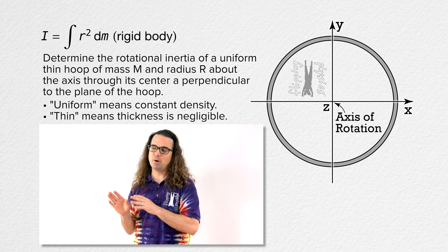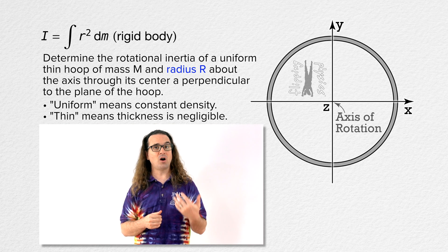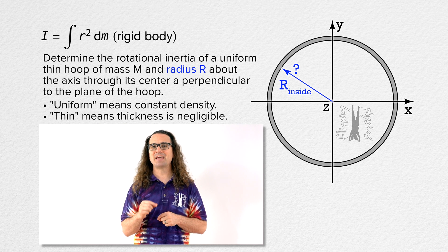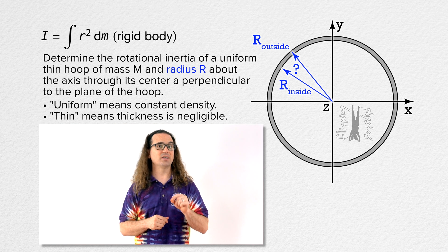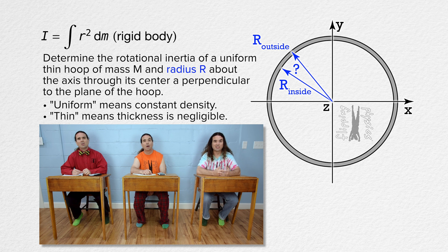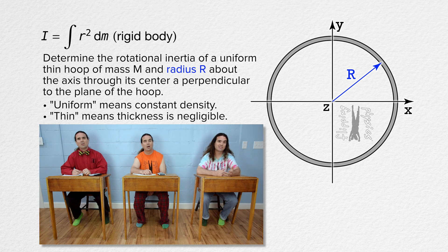In other words, this radius capital R — the radius of the uniform thin hoop — is that the distance from the axis of rotation to the inside of the uniform thin hoop or to the outside? It is actually both. Because the hoop is thin, the thickness of the hoop is considered to be zero, and the radius capital R goes to both the inside and outside of the uniform thin hoop.